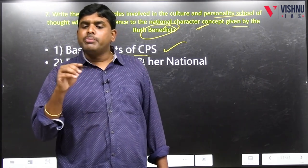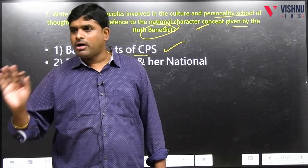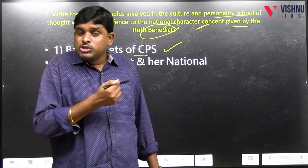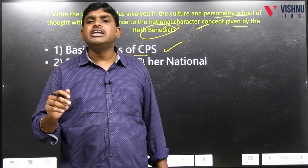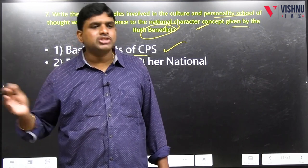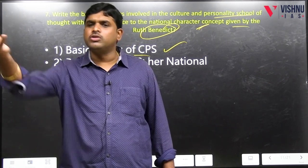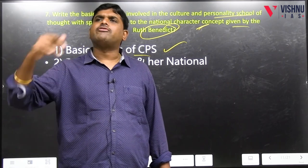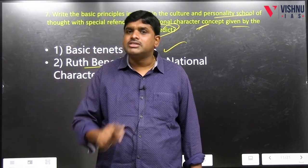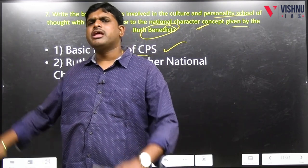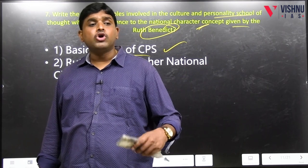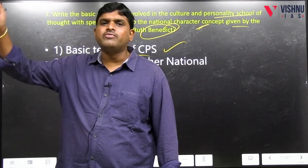Ruth Benedict's national character study: in the book 'The Chrysanthemum and the Sword,' she discussed the national characters of Japan, Germany, and Russia. Japan and German people didn't allow Ruth Benedict and her colleague Margaret Mead to do fieldwork, so they studied Japanese national character through other means. Their understanding: childhood socialization leads to adult personality — hence the national character of Japan. This can also be understood in the Indian context: in a slum locality where criminals are present in large numbers, the child born there has a very high chance of growing as a criminal — hence it will become the national character of that particular area.